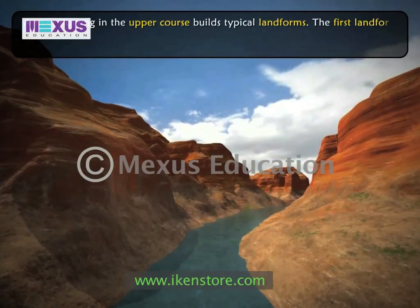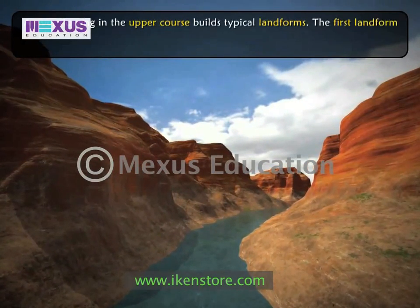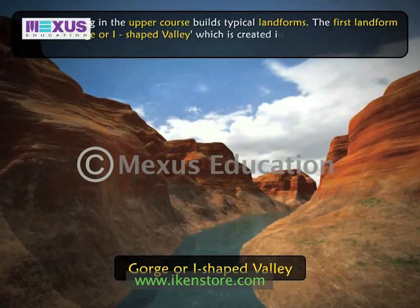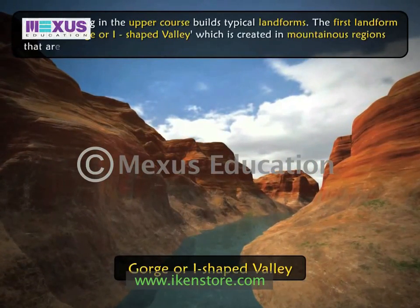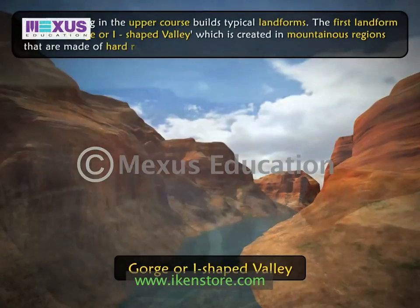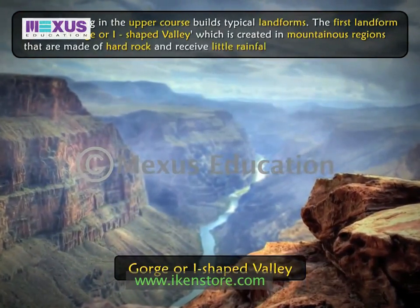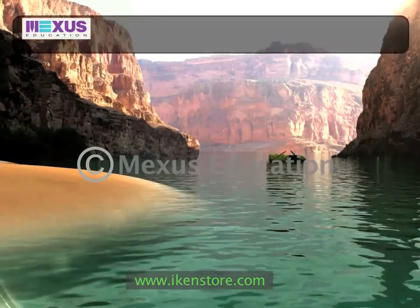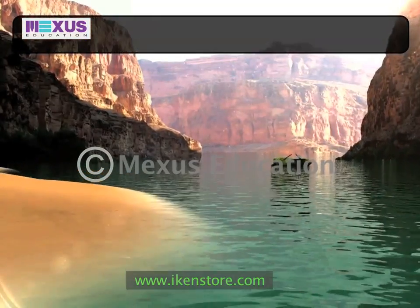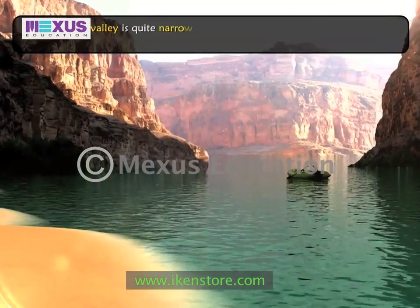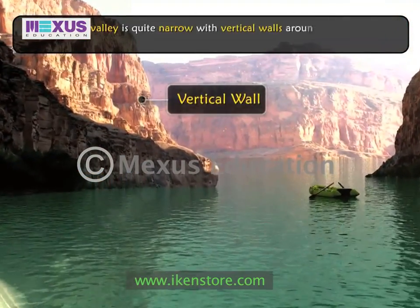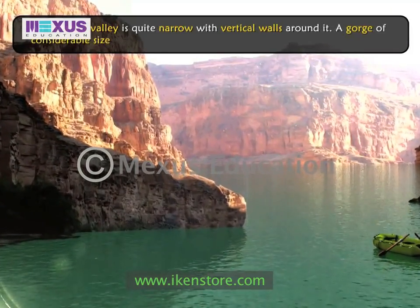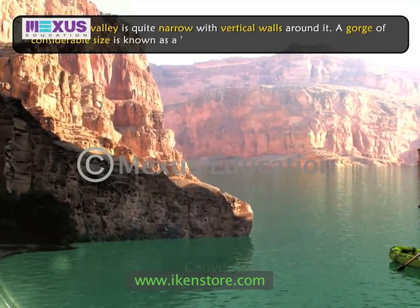The first landform is called a gorge or I-shaped valley, which is created in mountainous regions that are made of hard rock and receive little rainfall. An I-shaped valley is quite narrow with vertical walls around it. A gorge of considerable size is known as a canyon.